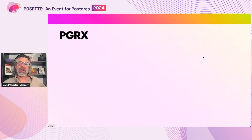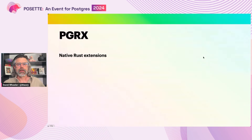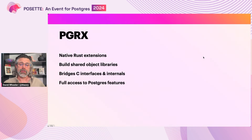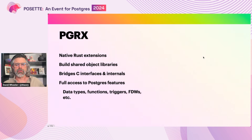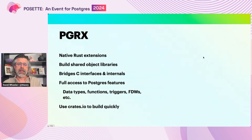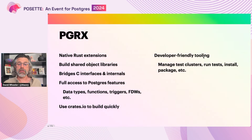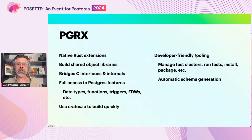Another recent source of excitement is PGRX, a framework for building extensions in Rust. It's like C in that it builds shared object libraries to be loaded into Postgres, but provides fairly transparent bridges from the Postgres C APIs to Rust. This allows full access to nearly all Postgres features, including custom data types, functions, triggers, foreign data wrappers, background workers, and more. And since PGRX is just Rust, it's easy to quickly add functionality from Rust crates without having to write something from scratch. PGRX also provides developer-friendly tooling to manage test clusters, run tests, install packages, and more, as well as automatic schema generation, simplifying the management of the SQL used to create an extension.